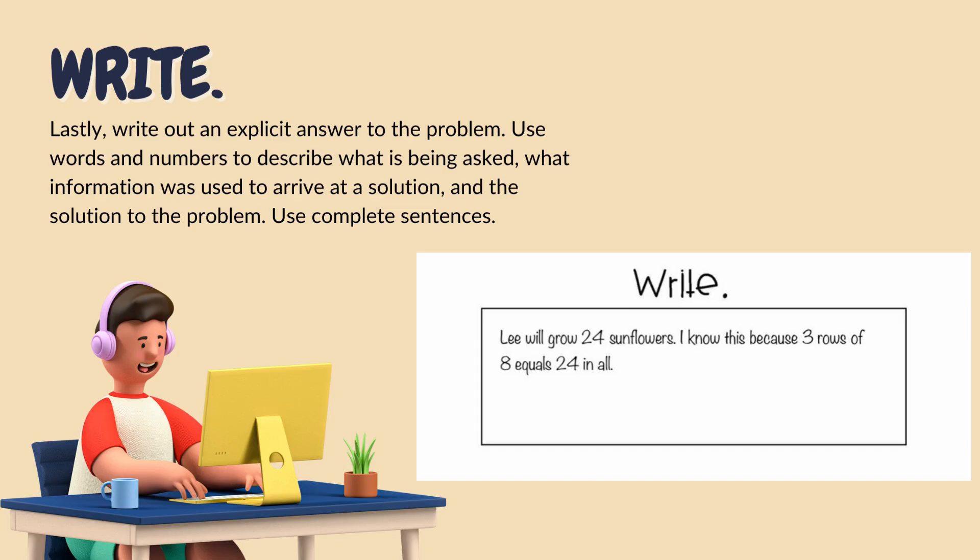Step three in RDW is W. W stands for write. We're going to write out an answer to the problem using words and numbers to describe what's being asked, what information was used to arrive at a solution, and the solution to the problem using complete sentences. Here's my example. Lee will grow 24 sunflowers. I know this because three rows of eight equals 24 in all.